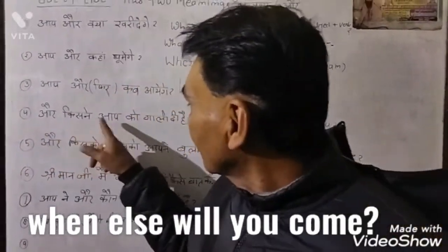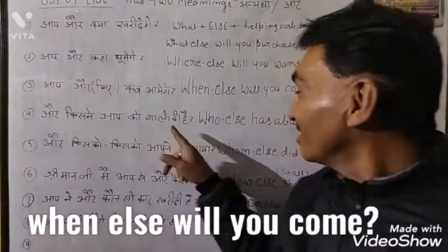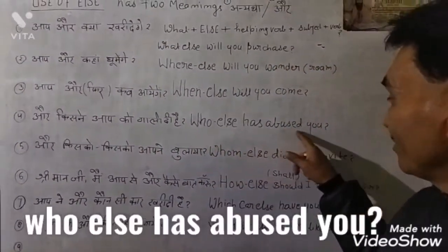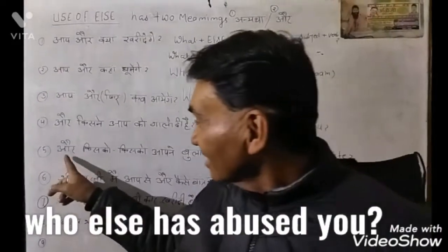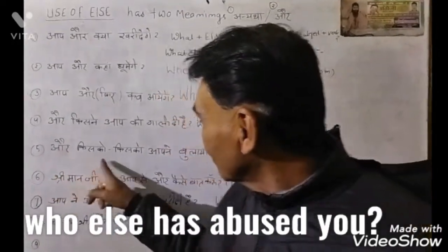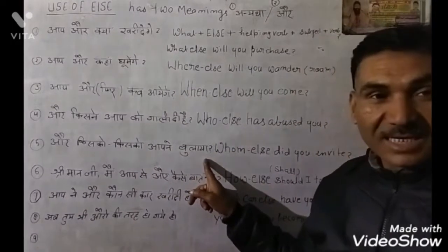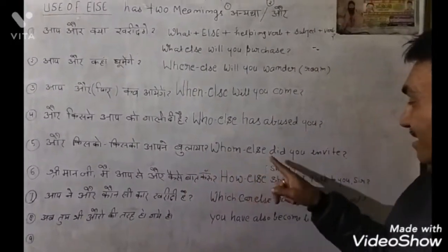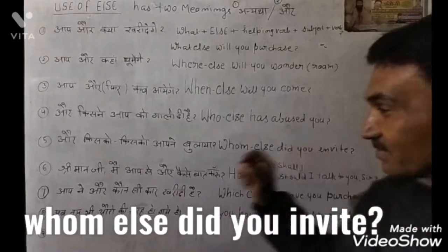और किसने आपको गाली दी है? So: 'Who else has abused you?' Now next: और किसको आपने बुलाया? — 'Whom else did you invite?' या काल भी लगा सकते हैं।